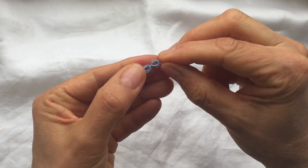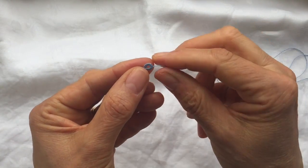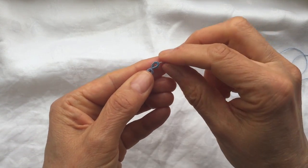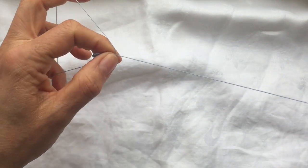So that's your first split ring made, and you can see how the thread now comes out the top of the ring, instead of at the base when you make a normal ring. Let's make a second one.